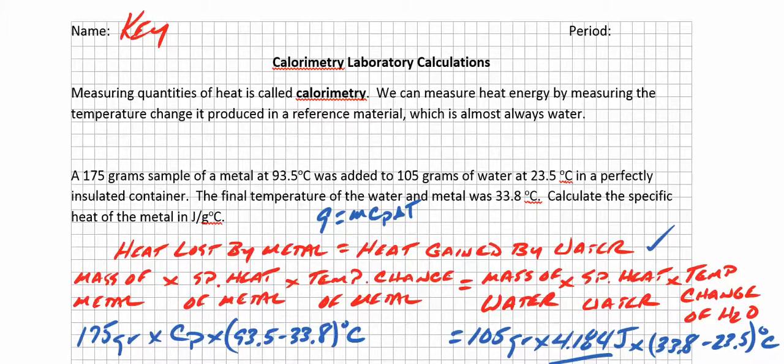Let's take a look at this problem to begin with. It says that a 175 gram sample of metal at 93.5 degrees Celsius was added to 105 grams of water at 23.5 degrees Celsius in a perfectly insulated container. Let's picture what we've got here. We've got this sample of metal that's warmer than the water that surrounds it. Only 105 grams of water, but that water is cooler than the metal that was placed into it. That means that heat is going to be transferred from the metal to the water.